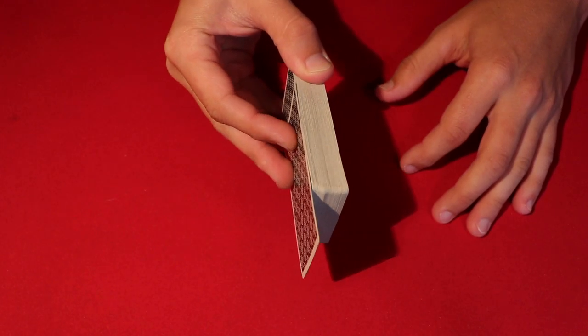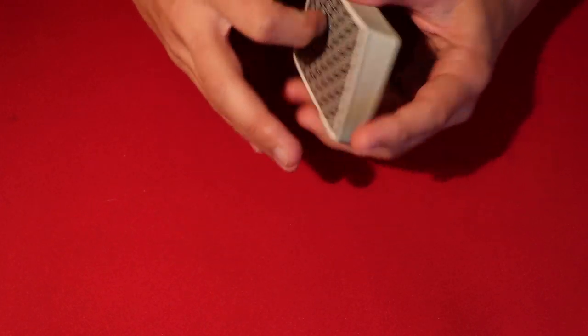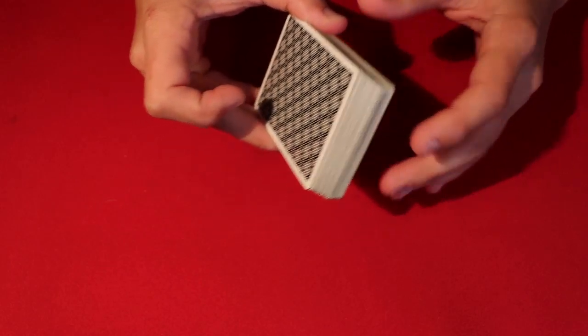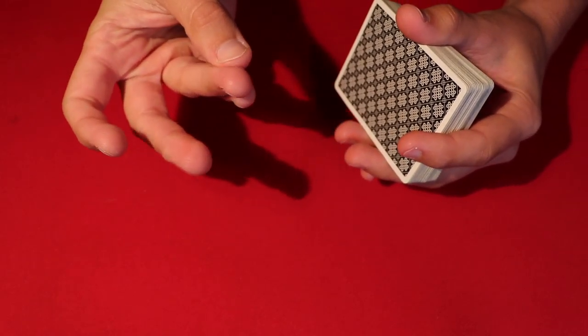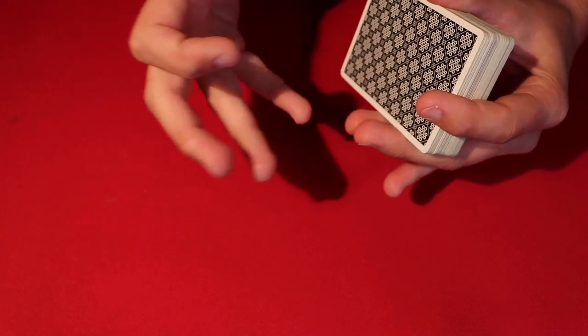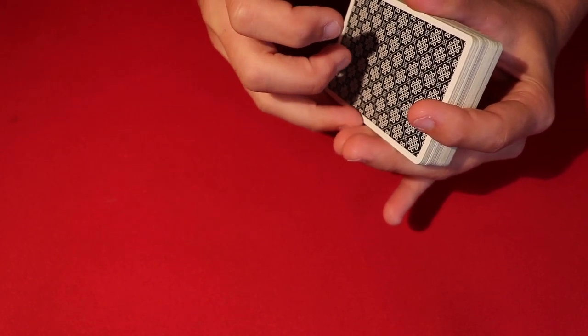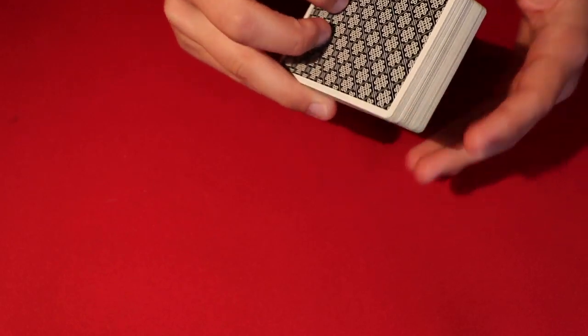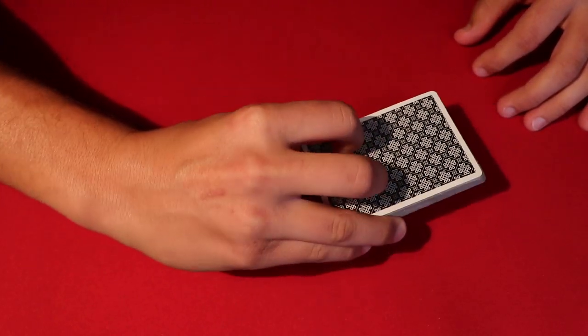So essentially this is what you do. You're going to hold the deck with your thumb at the left-hand side, and you can put your ring and your middle finger on the sides of the deck.